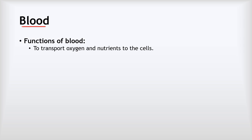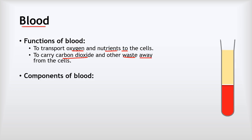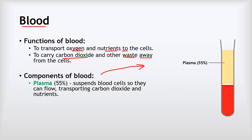The substances our cells need are transported by the blood, so understanding the structure of blood is really important. The purpose of blood is two things: firstly, to transport oxygen and nutrients to our cells, and also to carry carbon dioxide and other waste such as urea away from our cells. The top layer when separated is a substance called plasma, making up 55% of the blood. This is the liquid part of the blood — it suspends the blood cells so they can flow, and also transports dissolved carbon dioxide and nutrients.